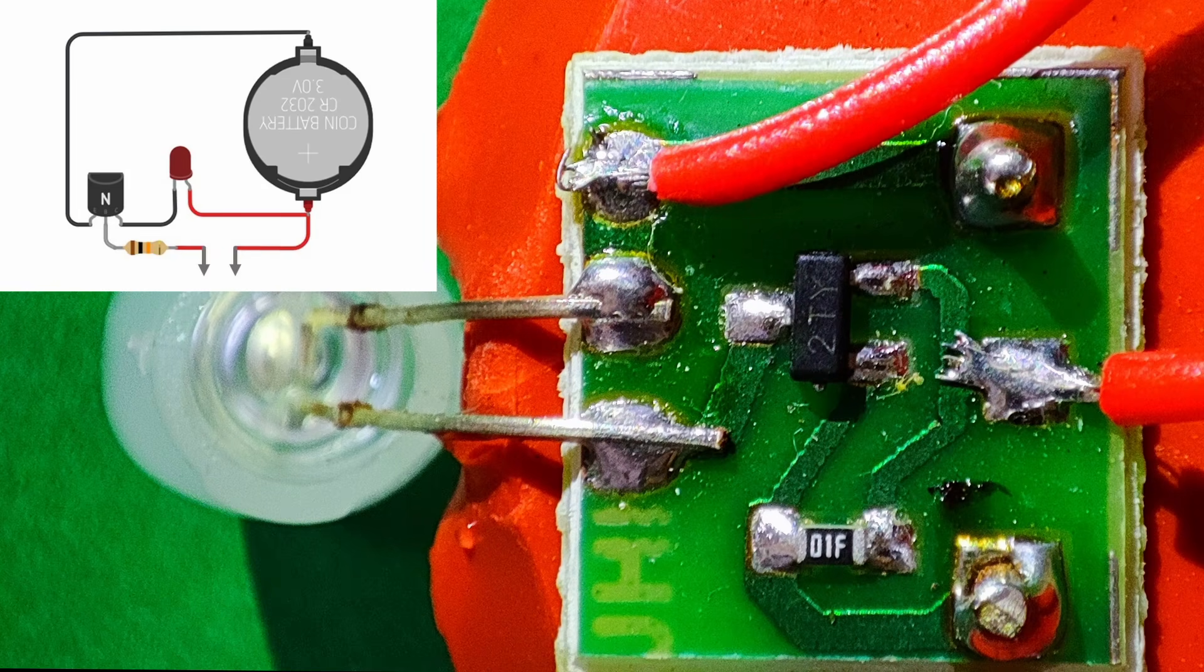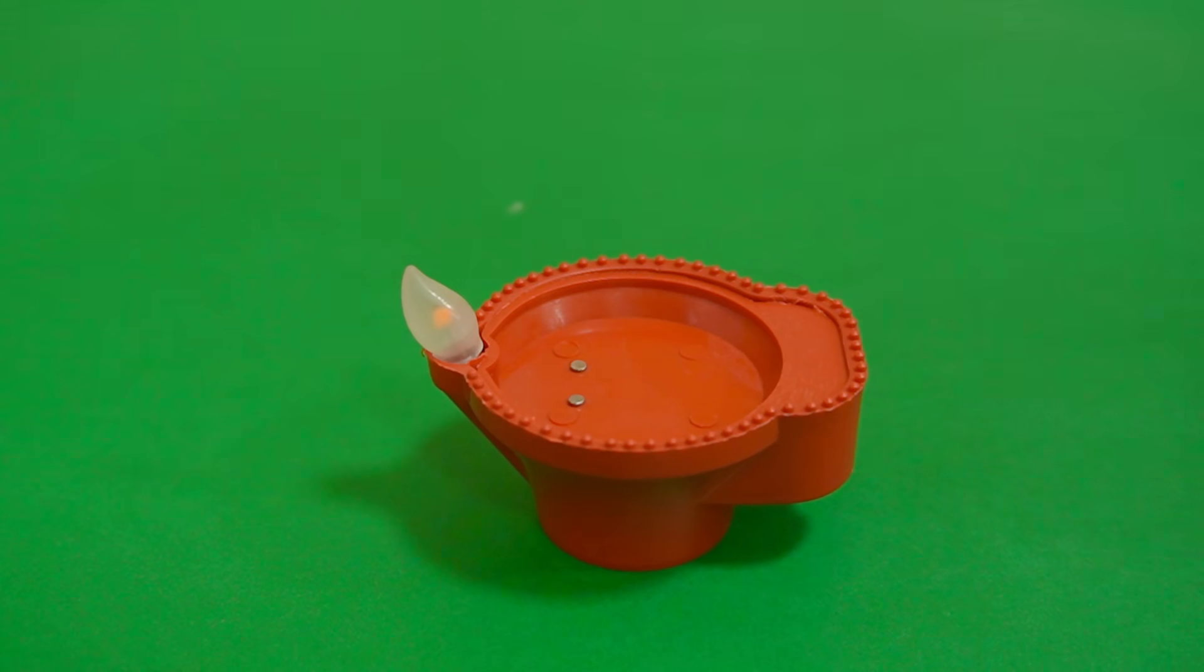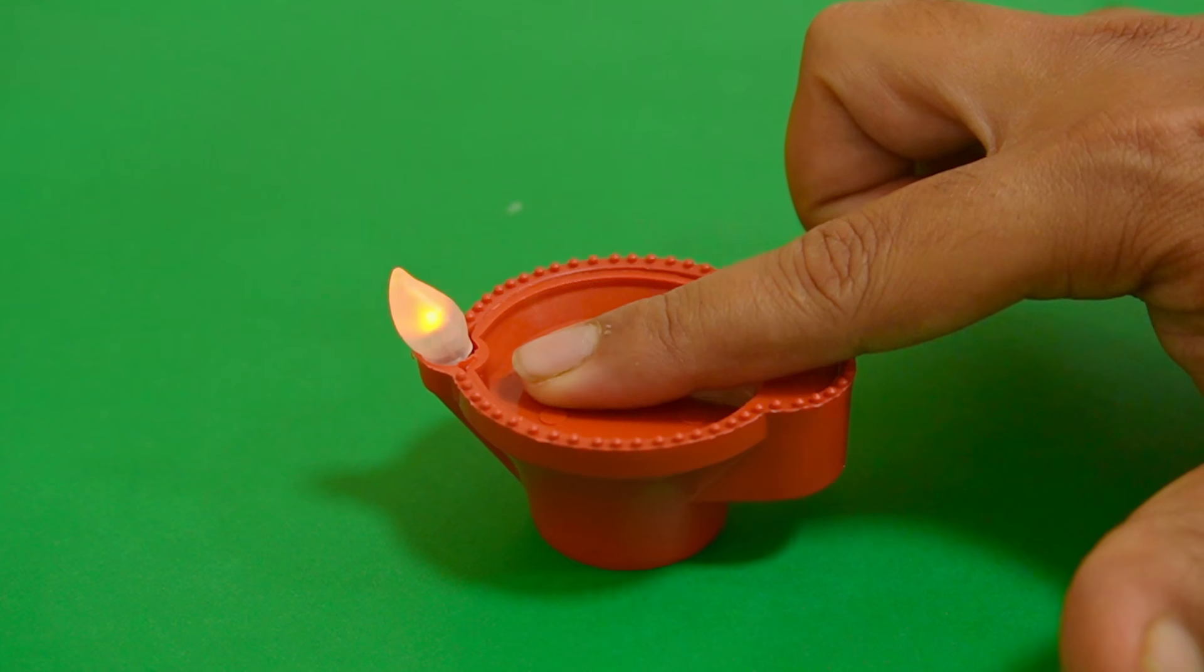The circuit consists of a transistor and resistor. When the two terminals are closed, the transistor turns on the LED.